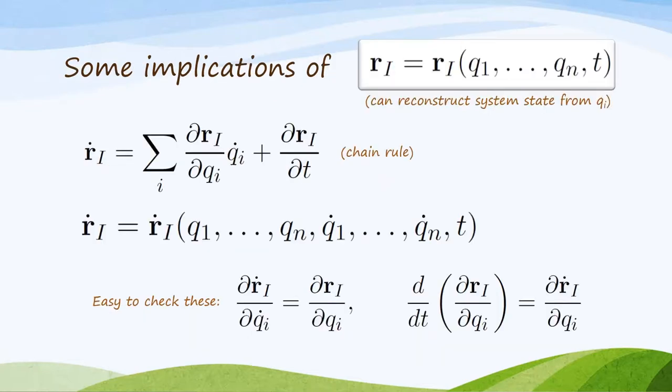So we need some mathematical implications of this assumption that we can smoothly reconstruct the system from the little q. From the chain rule, taking a total time derivative, we get a relationship between r dot sub i and q dot sub i. We can regard r dot sub i as a function of q and q dot, and then we have partial derivatives defined, and there's some simple relationships you can check on the bottom of the screen.